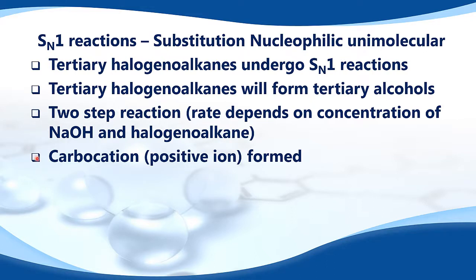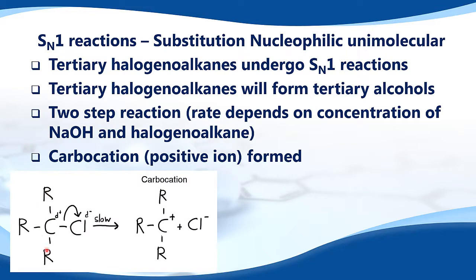A carbocation, or positive ion, is formed in the first step. We have a tertiary halogenoalkane, and you'll notice the carbon is a little bit positive and the chlorine is a little bit negative. That's because of the difference in electronegativity between the carbon and the chlorine, which makes it a polar bond. A curly arrow shows the movement of a pair of electrons. The Cl atom breaks off from the molecule, and we're left with a positive ion — a carbocation.